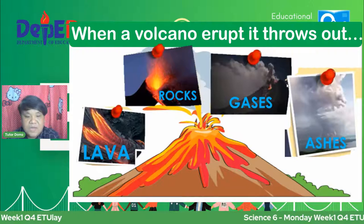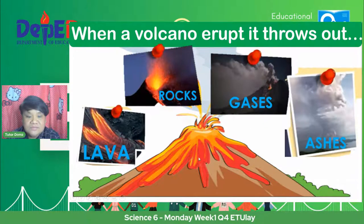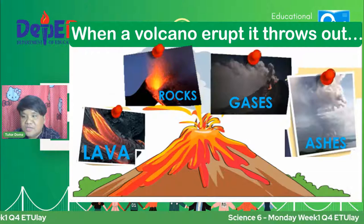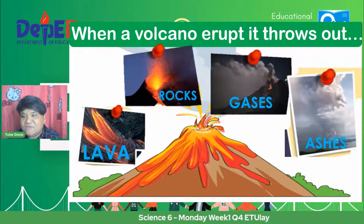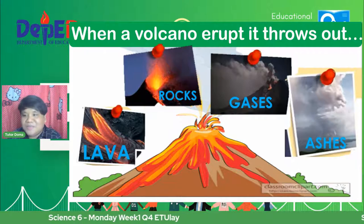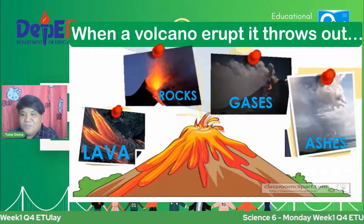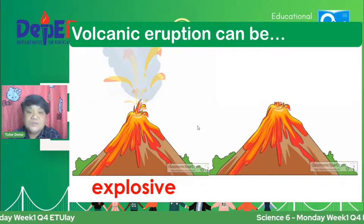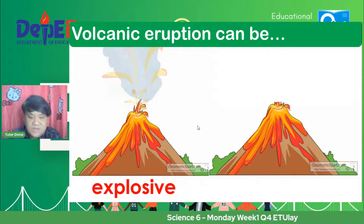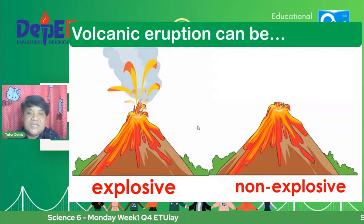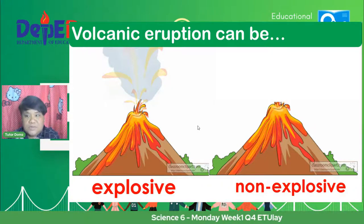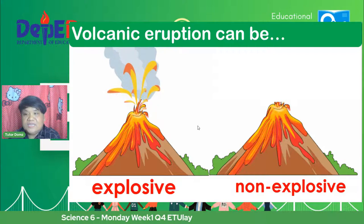Ito yung mga nilalabas ng vulkan. So volcanic eruption can be explosive or non-explosive. Yung vulkan, lalo yung mga vulkan dito sa Pilipinas, ito ay categorized into two. Una, yung explosive — yung sumasabog. Pangalawa naman, yung non-explosive. When we say explosive volcanic eruption, this is a large amount of pyroclastic materials ejected by the volcano into the air. Pyroclastic ang tawag natin dyan sa pagtalsik-talsik ng mga bato. There are different kinds of pyroclastic materials — these are the lava, ashes, volcanic gases, at saka yung mga rocks.